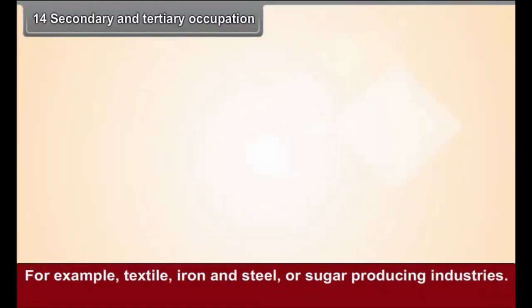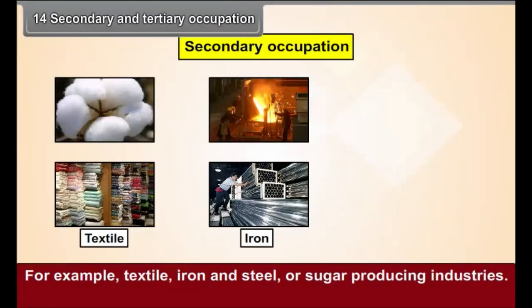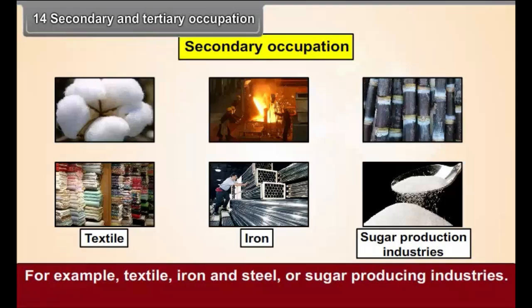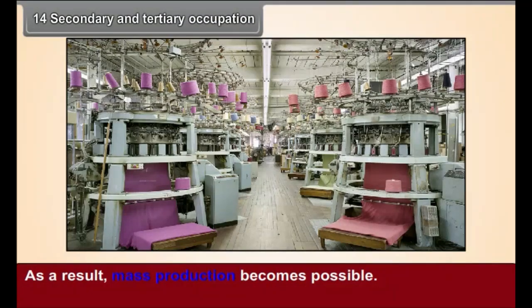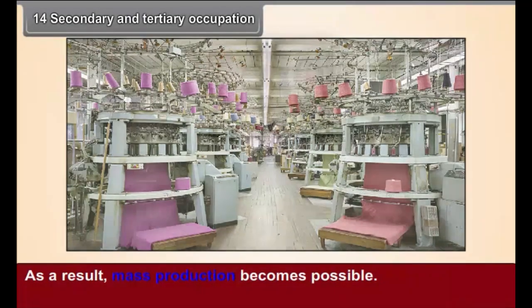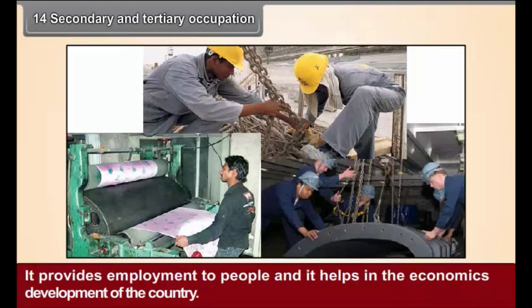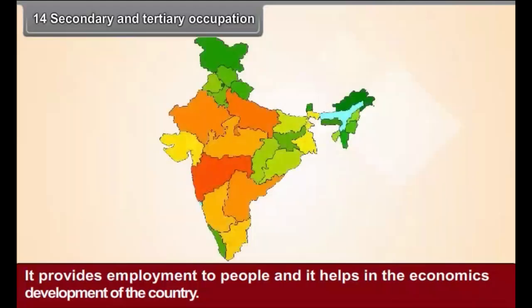For example, textile, iron and steel, or sugar producing industries. Machines are used in these occupations on a large scale in order to obtain maximum production in less time. As a result, mass production becomes possible. It provides employment to people and helps in the economic development of the country.